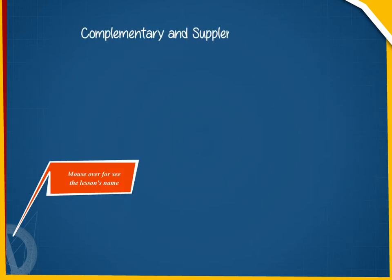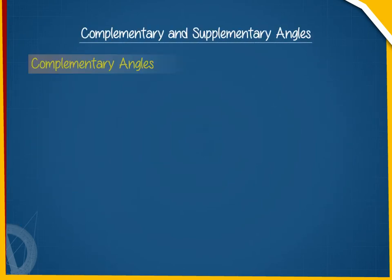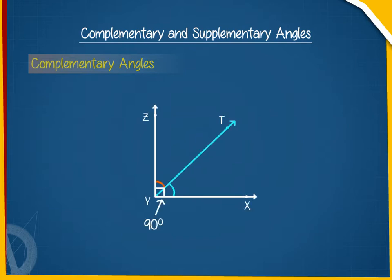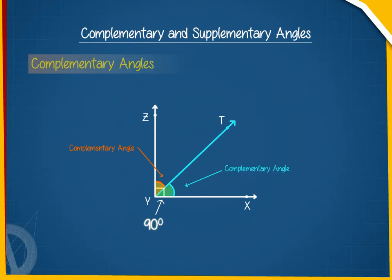Complementary and Supplementary Angles. When the sum of two different angles is 90 degrees, each of the two angles is said to be a complementary angle to the other angle. In the given figure, we can see two angles with different magnitudes and a sum equal to 90 degrees. Here, angles ZYT and TYX are complementary to each other.